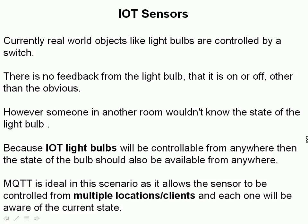Currently real-world objects like light bulbs are controlled by a switch and there's no feedback mechanism when you turn the light on, other than actually seeing the light come on — obviously if you're in the same room. Someone in another room wouldn't know the light was switched on, so they wouldn't know the state of the light. IoT or smart home light bulbs are controllable from anywhere across the internet, so the state of the bulb should be available from anywhere — it's important that you know the state of the sensor or device you're activating.